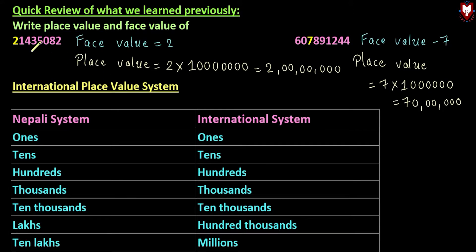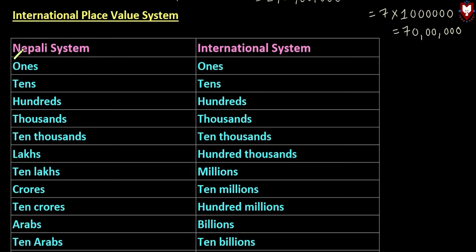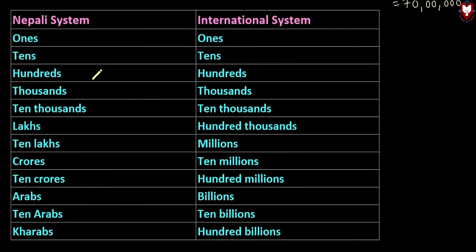So we can take a quick review. We will discuss this in the international place value system. We will also discuss the Nepal system and how many place positions are in the Nepal system. In the Nepal system we have: Ones, Tens, Hundreds, Thousands, Ten-Thousands, Lakh, Ten-Lakh, Crore, Ten-Crore.